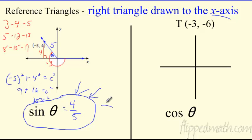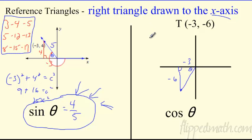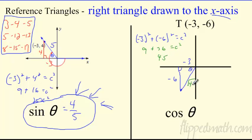What if I don't give you a picture? Can you still do this? Sure. Plot the point negative three, negative six — somewhere down in quadrant three. Drop that perpendicular to the x-axis. We know the horizontal leg is negative three and the vertical leg is negative six. The hypotenuse is always positive. This isn't a Pythagorean triple, so: 9 + 36 = 45, and the square root of 45 simplifies to three radical five.